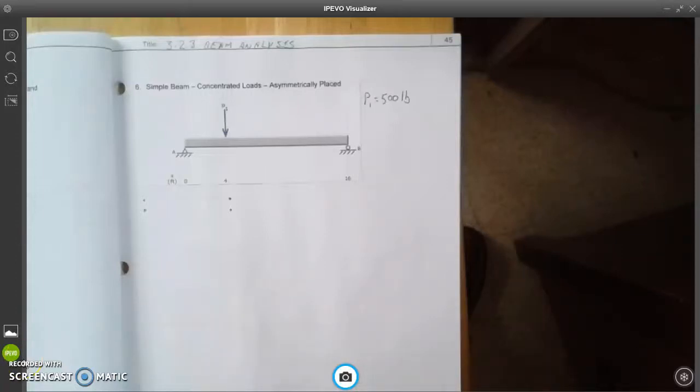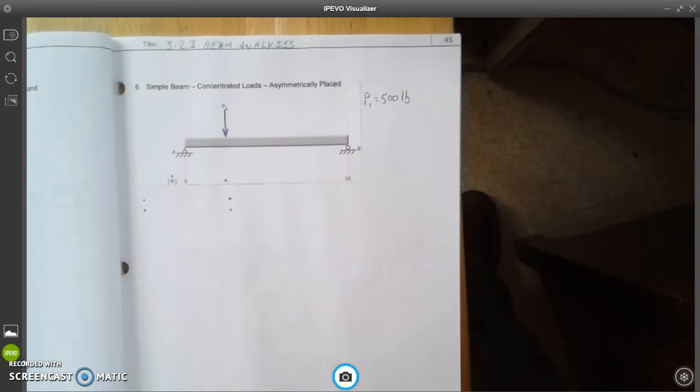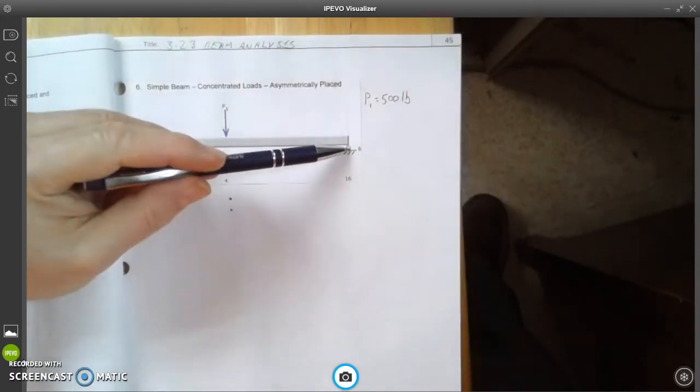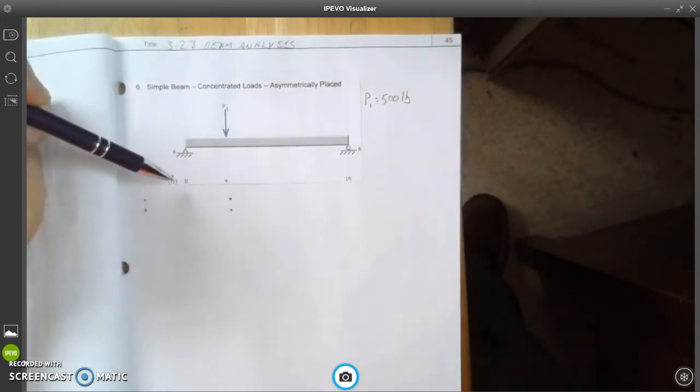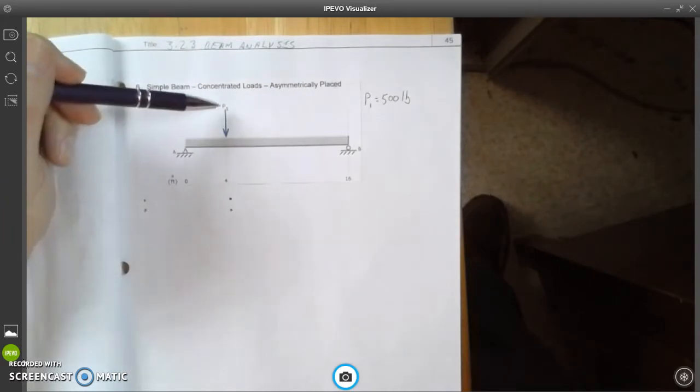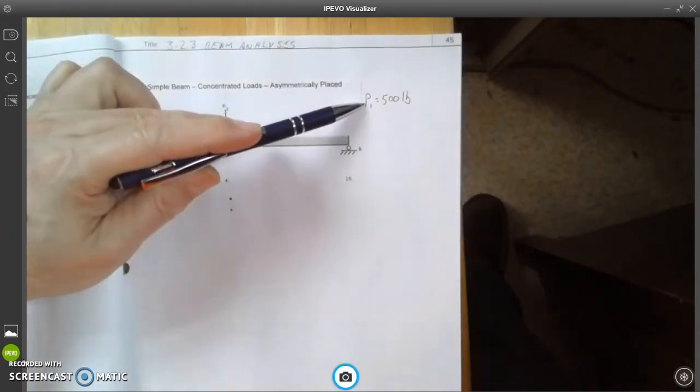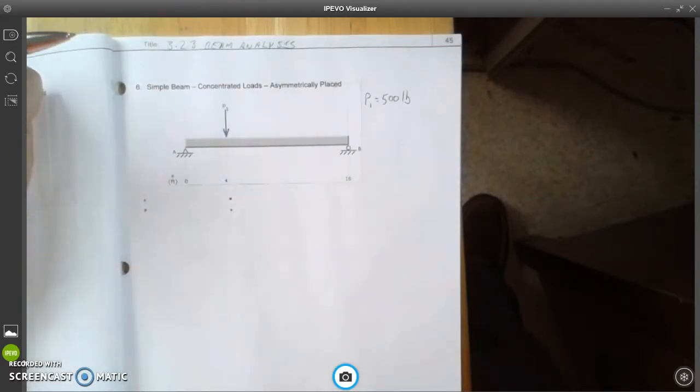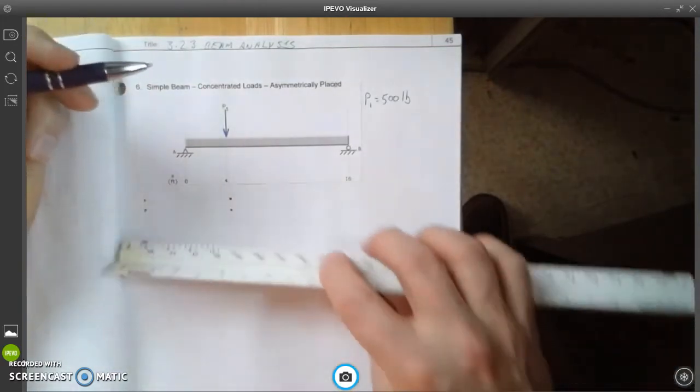Now we're going to calculate a simple beam that has concentrated loads that are asymmetrically placed. So the first thing to do is to take a look here. We have A right down here, and we have B over here at a distance of 16 feet. We have P1, which is going to be equal to 500 pounds, and that is at 4 feet. So it's asymmetric. It's not right in the middle.